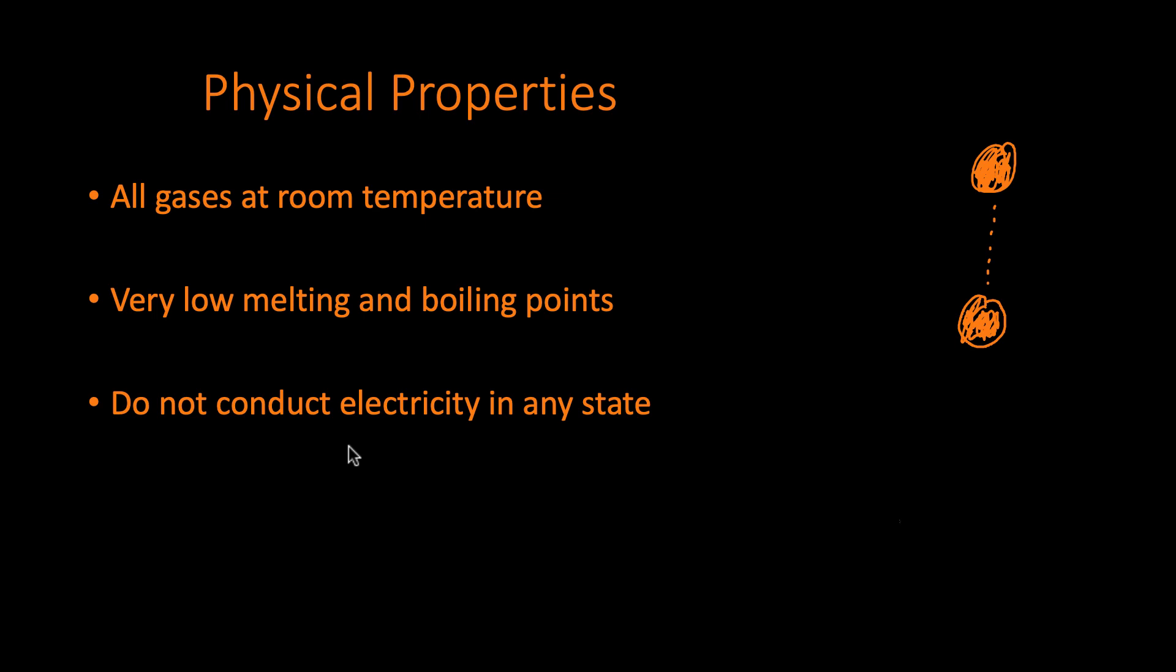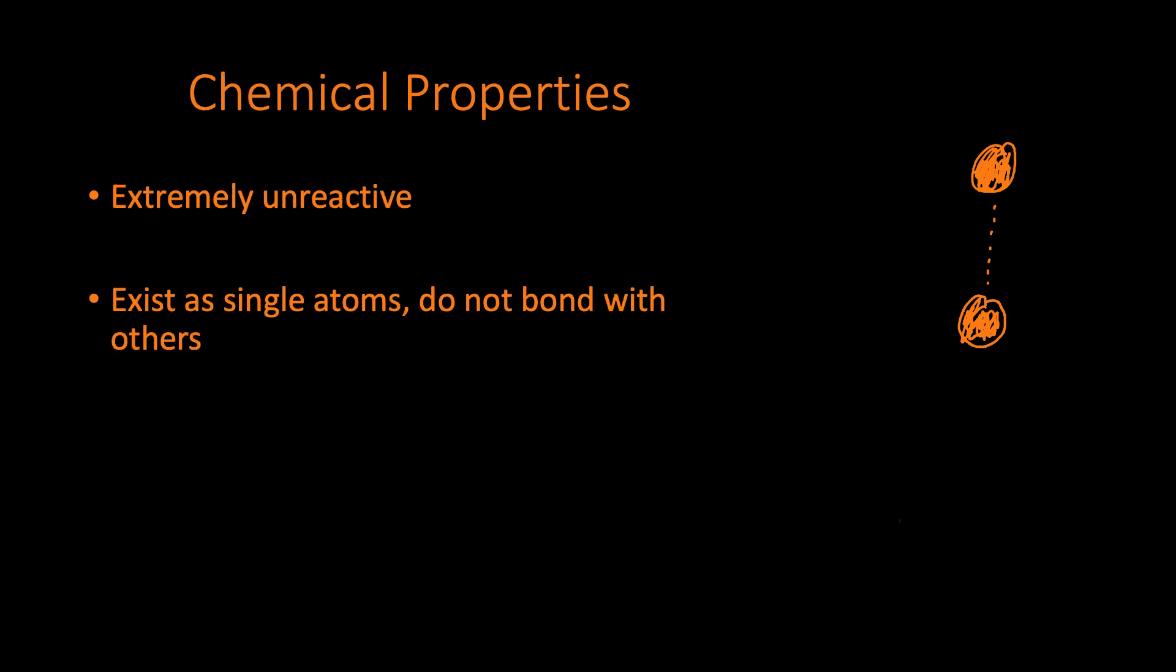What about the chemical properties? Chemically they are extremely unreactive because they have a full outer shell. This means they don't need to gain any electrons or lose any electrons in order to achieve a full outer shell, they already have one. That's what makes them extremely unreactive. And also because they have a full outer shell, they therefore exist as single atoms and do not bond with other atoms in order to form compounds under any kind of usual conditions.